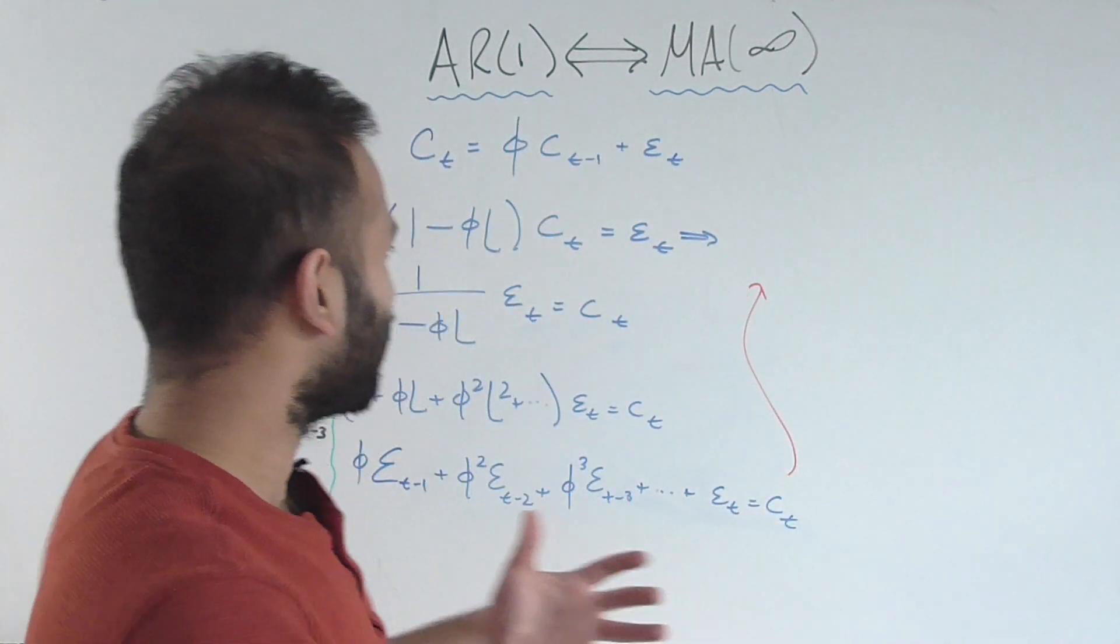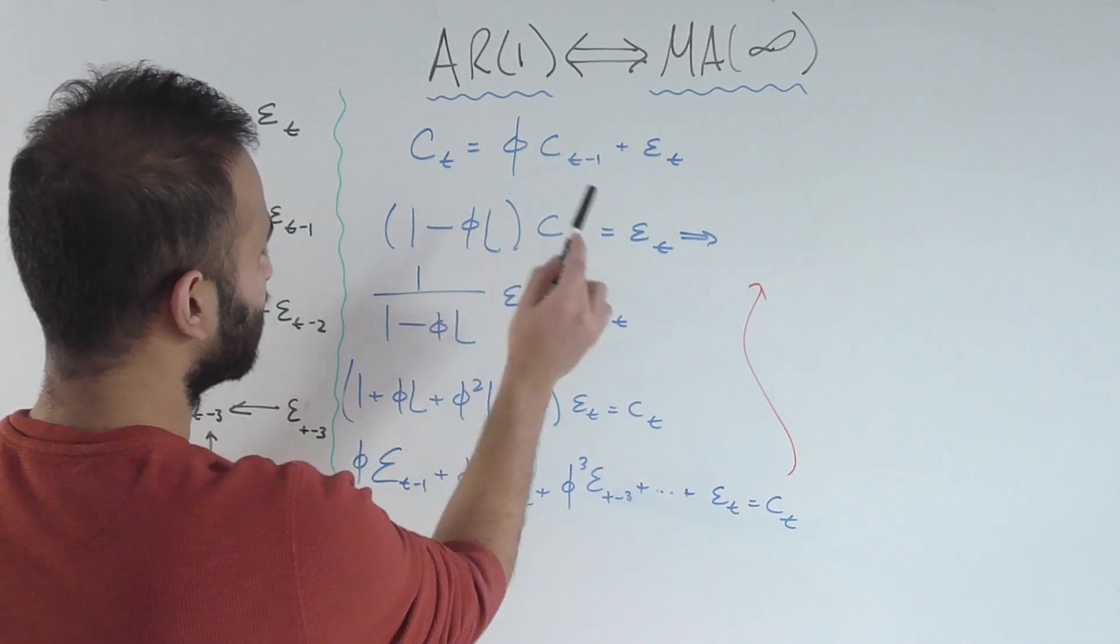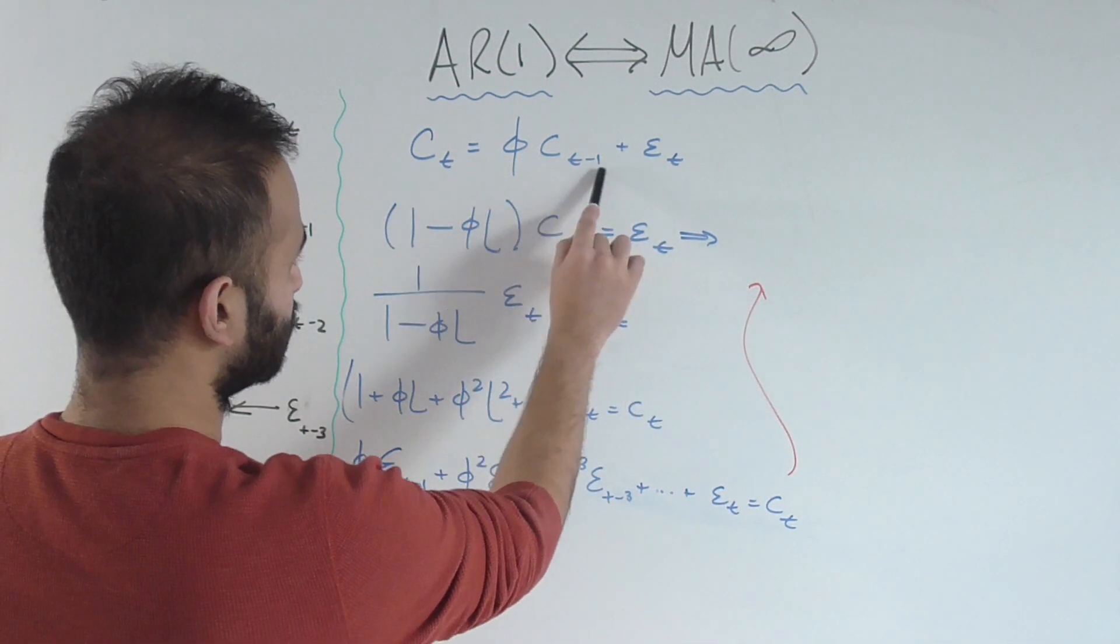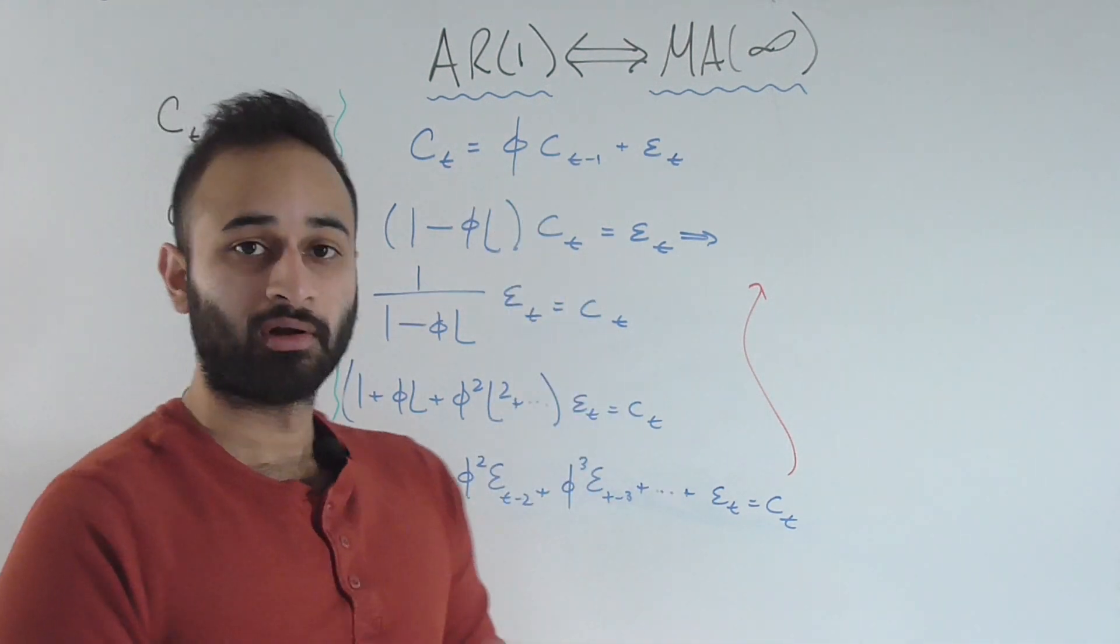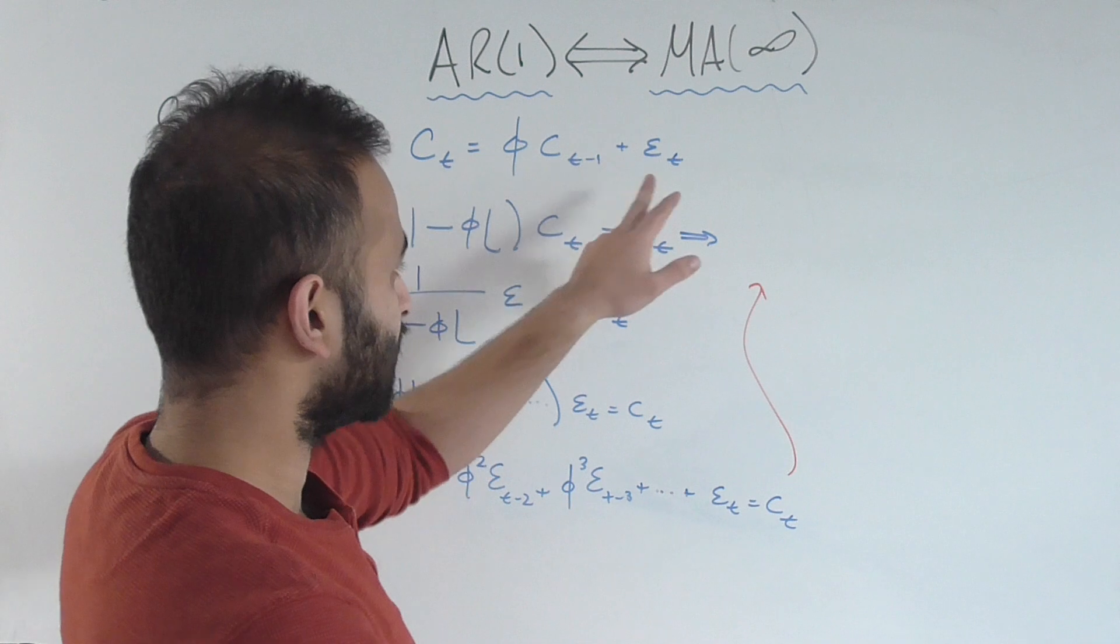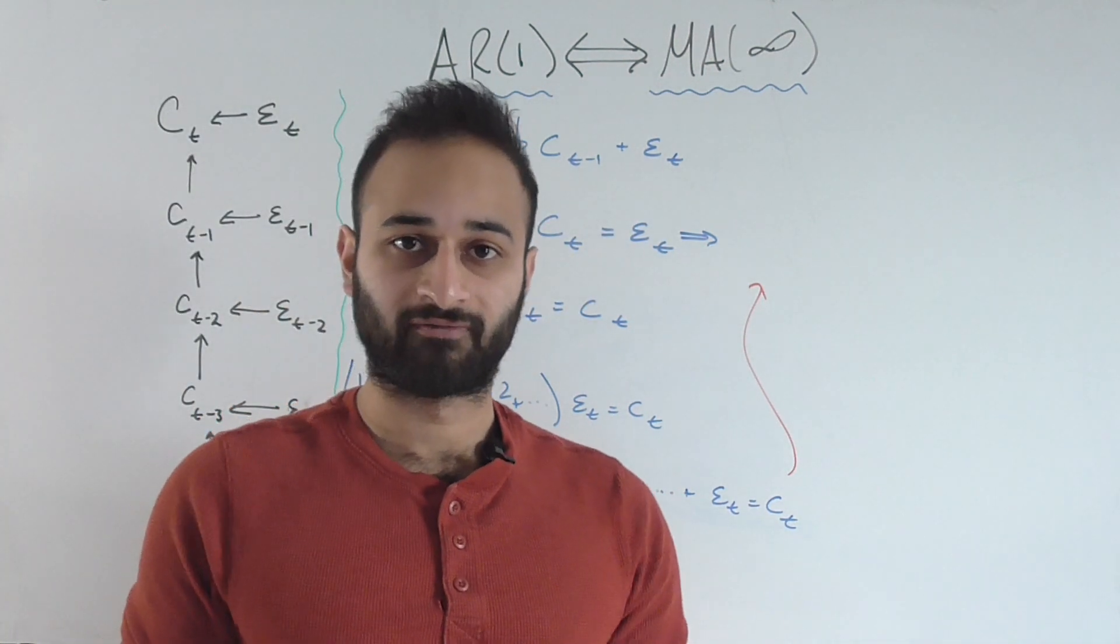First let's look at the mathematical formulation. Here's an AR1 process. We have some time series as a function of its lagged version from one period ago. There's a coefficient φ, which is going to be important later on, plus some error or innovation from the current time period, which is unobserved.